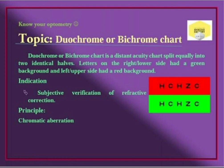If a patient sees more clearly on the red side, they are hypermetropic or undercorrected; we add minus power to correct them. If a patient sees more clearly on the green side, they are myopic or overcorrected. To summarize: green clear indicates myopia, and red clear indicates hypermetropia.